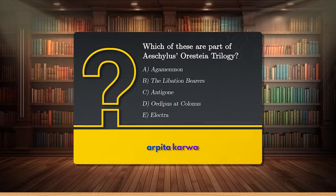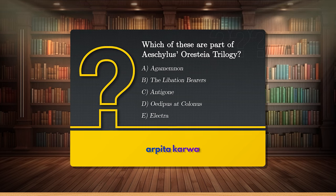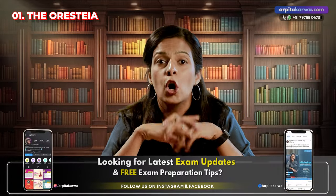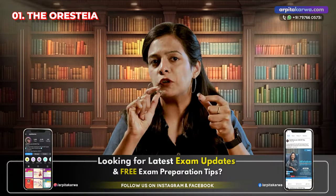A question from Choephori was asked in UGC Net 2021, and a question based on this trilogy was asked again in the June 2023 exam — the question is right in front of you. So ensure that you write it down in your notes. Pardon me for pronunciation, as these are Greek texts with various pronunciations available. I am using the British pronunciation, so there might be multiple other pronunciations.